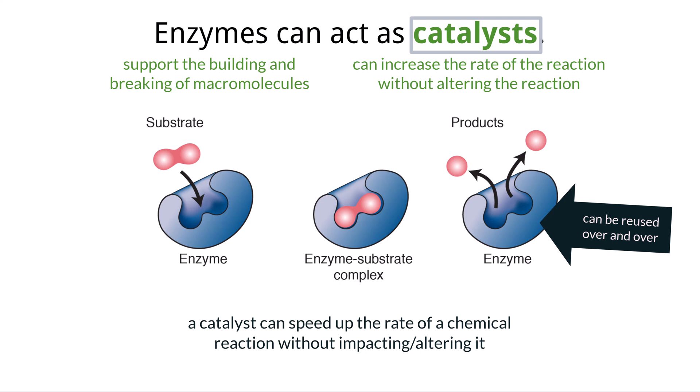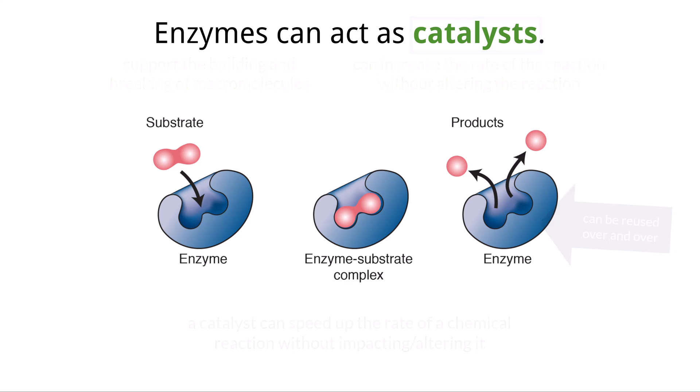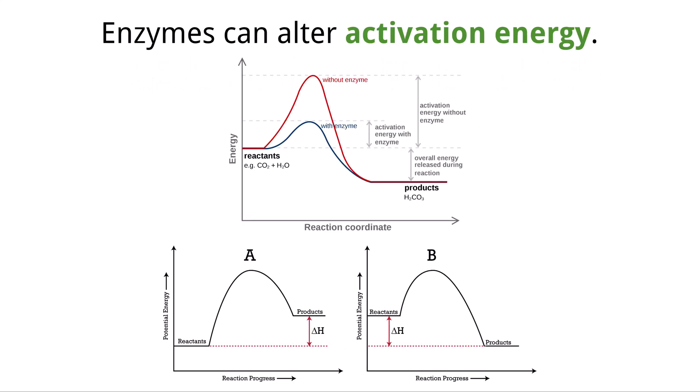Enzymes are extremely important for the human body because without them, many of the reactions that need to take place would happen much slower, which is time that our cells do not have based on how we have evolved. So enzymes can speed up chemical reactions, but how does that actually work? How can something speed up a chemical reaction?